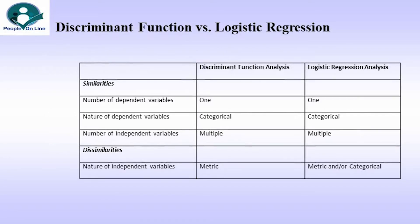Discriminant Function versus Logistic Regression. The similarities between discriminant function analysis and logistic regression analysis are: number of dependent variables — one in both cases; nature of dependent variables — categorical in both cases; number of independent variables — could be multiple in both cases. The major dissimilarity is the nature of independent variables: these necessarily have to be continuous or metric for discriminant function analysis, whereas for logistic regression analysis these could be metric and/or categorical.